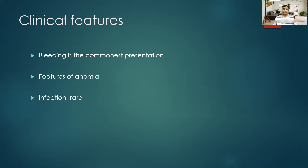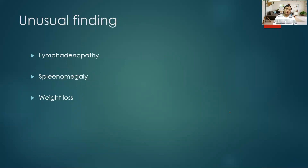The clinical dictum is: an apparently healthy adult with a decrease in all cell lineages — think of aplastic anemia as one of the possibilities. When you examine the patient you can see petechiae and pallor. However, if you find lymphadenopathy, splenomegaly, or weight loss, always think of an alternative diagnosis. In aplastic anemia the spleen is usually normal. If the spleen is enlarged, consider other causes of pancytopenia like leukemia or hypersplenism.